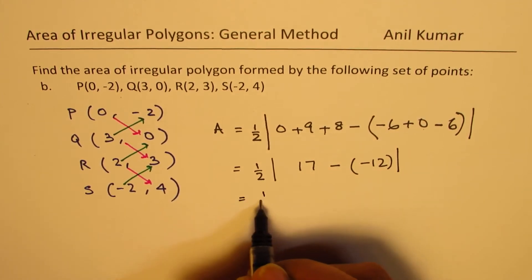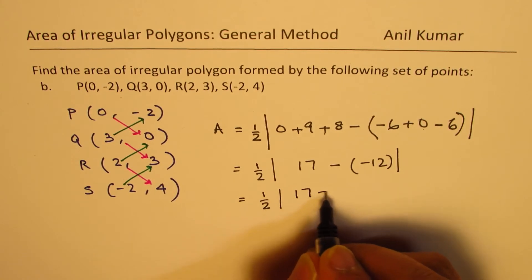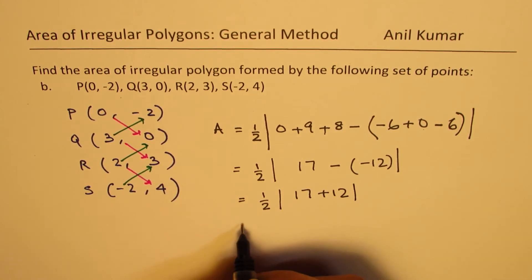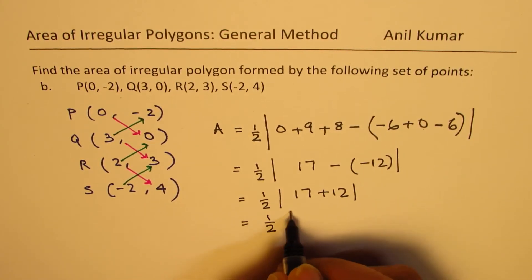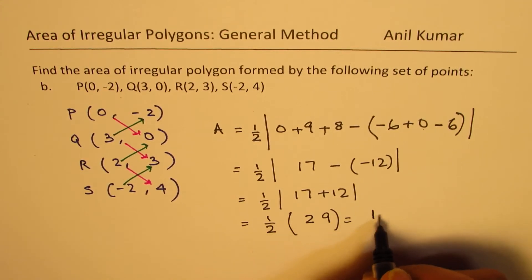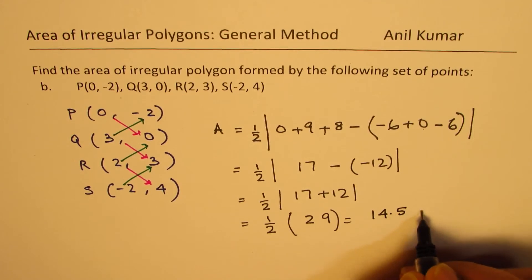Which is half of absolute value of 17 plus 12. Which is half of 29. Which is 14.5 units squared.